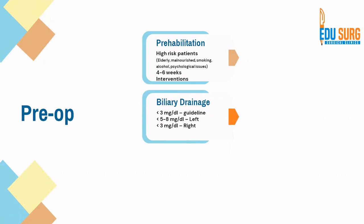Another important point specific to liver surgery is biliary drainage. The guideline recommends that bilirubin should be less than 3 milligrams per dL or 50 millimoles per liter. In our unit, for a right hepatectomy it is important that bilirubin is less than 3 mg/dL, but for a left hepatectomy we can extend the indication to bilirubin up to 5 to 8 mg/dL depending on other factors. There is an entire video on pre-operative planning of liver surgery with a link in the description below.